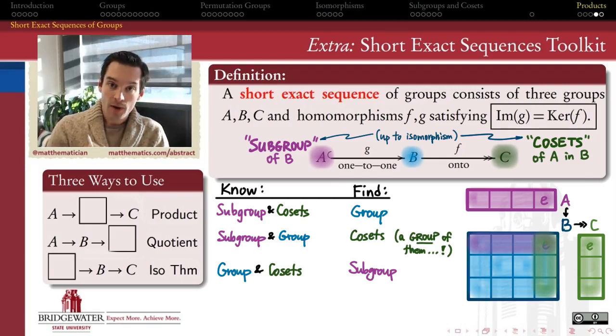So, in this video, I want to talk about why the product is an example of something that a short exact sequence is able to construct. But that might not always happen in a unique way. There may be more than one way, up to isomorphism, to take a product of two groups. If I know the row that I want and the column that I want, there may be more than one way of producing this table of elements here in the middle for the same given A's and C's.